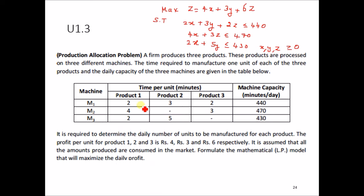The third problem is a product allocation problem. A company produces 3 products — product 1, product 2, and product 3 — with the data given in tabular form. Based on machine capacity in minutes per day, the constraints are: 2X + 3Y + 2Z ≤ 440; 4X + 0Y + 3Z ≤ 470; 2X + 5Y ≤ 450. The profit per unit is 4 for product 1, 3 for product 2, and 6 for product 3, so the objective function is being formulated accordingly.